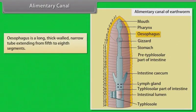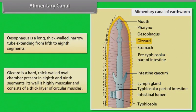The oesophagus is a long, thick-walled, narrow tube extending from the fifth to eighth segment. The gizzard is a hard, thick-walled oval chamber present in the eighth and ninth segments. Its wall is highly muscular and consists of a thick layer of circular muscles.